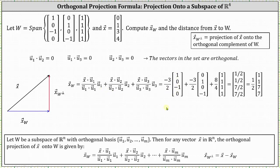Next, vector x dot vector u2 is 0·0 + 1·1 + 3·0 + 4·(−1), which is −3. In the denominator we have vector u2 dot vector u2, which is 0·0 + 1·1 + 0·0 + (−1)·(−1), which is 2. So we have (−3/2) times vector u2, which is the vector [0, 1, 0, −1].